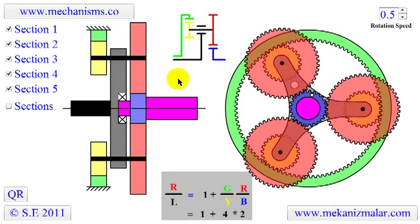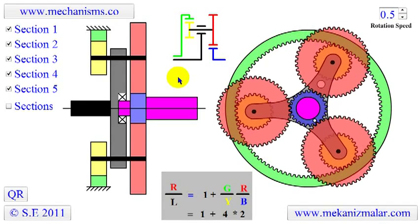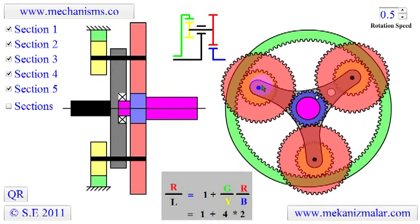Planetary gearing is a gear system that consists of one or more outer gears, or planet gears, revolving around a central sun gear.